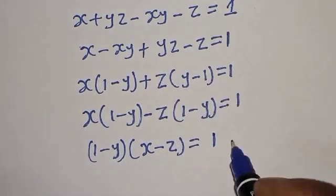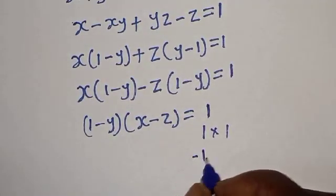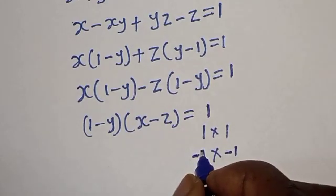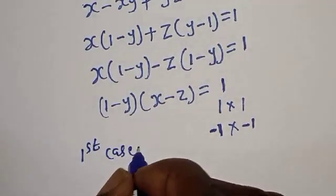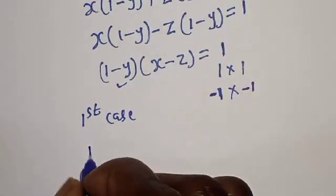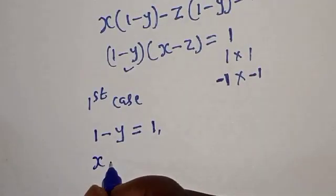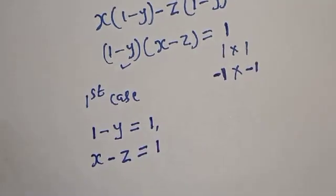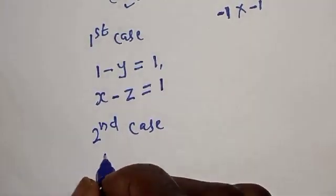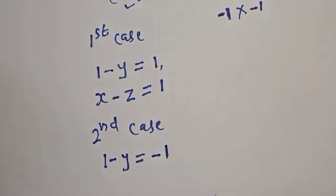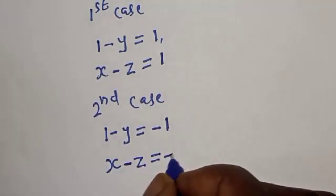Since we are asked to find the integer value, then 1 equals 1 times 1, and also 1 equals minus 1 times minus 1. For the first case: 1 minus y is equal to 1, and x minus z is equal to 1. For the second case: 1 minus y is equal to minus 1, and x minus z is equal to minus 1.